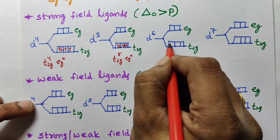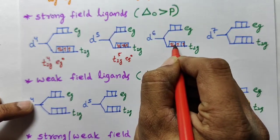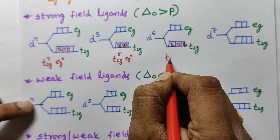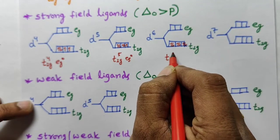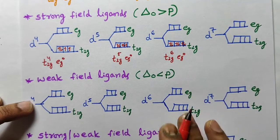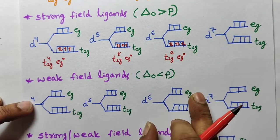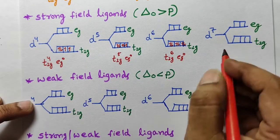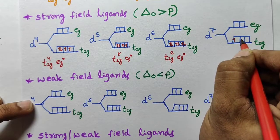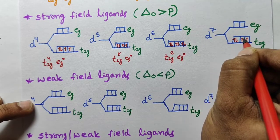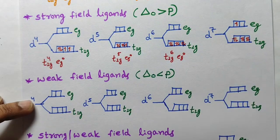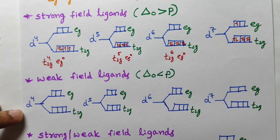For d6 with strong field ligand: one, two, three, four, five, six — all into t2g, so t2g⁶ eg⁰. Strong ligand: first t2g is completely filled. For d7 with strong field ligand: seven electrons — t2g is fully filled first, then one electron goes to eg, giving t2g⁶ eg¹.